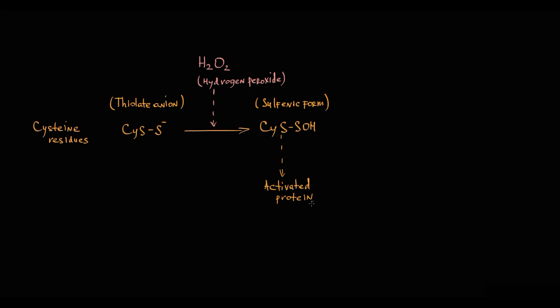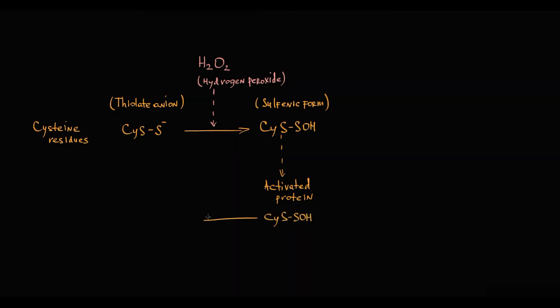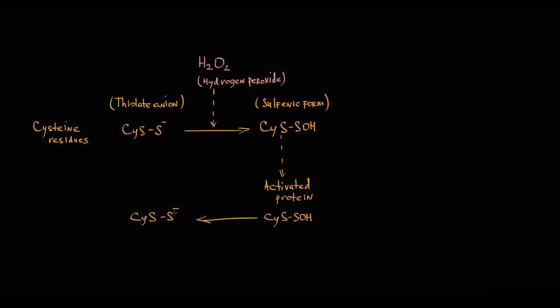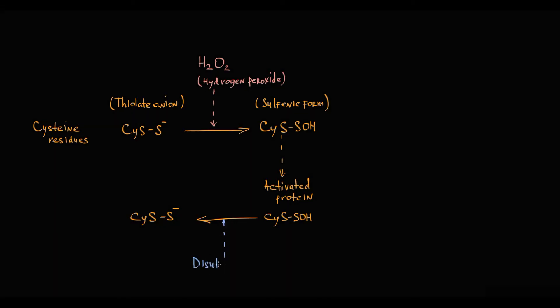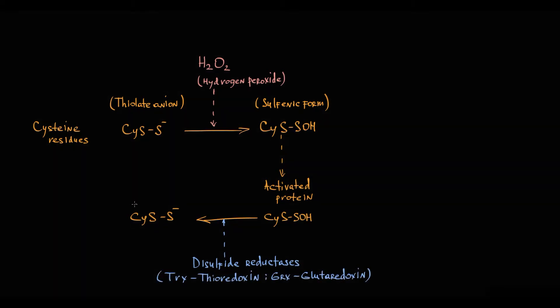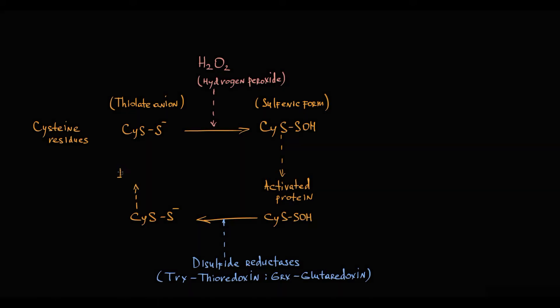Everything that becomes activated must at some point be inactivated. To inactivate the protein, these changes must be reversed and cysteine residues must be converted back to their initial form. The sulfenic form must be reduced back to thiolate anion, and this reduction is provided by enzymes called disulfide reductases — thioredoxin and glutaredoxin. These two enzymes return protein function to its original state.